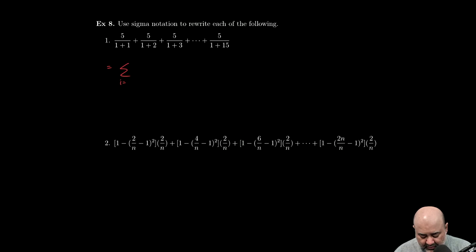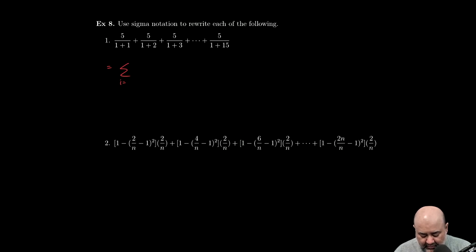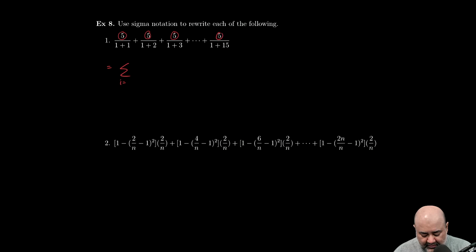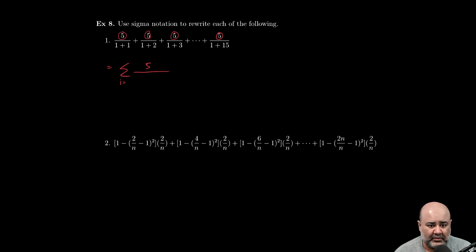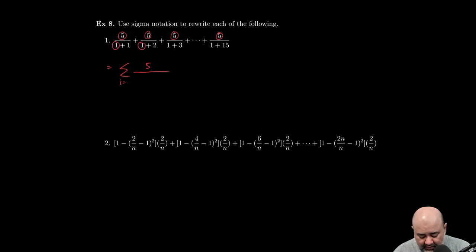I notice that the numerator is always 5, so whatever is a constant I place it in something that doesn't change. It's going to be fixed as part of the formula, it's not going to depend on my index. And then this one is always the same as well, so I'm going to have 1 plus, all of them are plus, so that's accounted for.